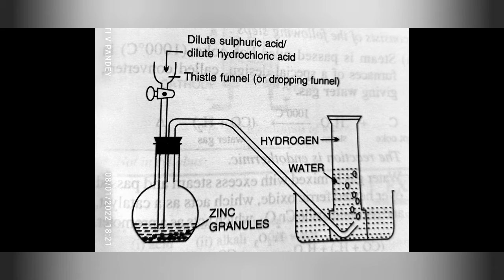The reaction will gradually start in the form of effervescence and evolution of gas. When all the air from the apparatus has been expelled, collect the gas over water. Hydrogen is collected by the downward displacement of water because it is virtually insoluble in water. It forms an explosive mixture with air and therefore cannot be collected by downward displacement of air, even though it is lighter than air.